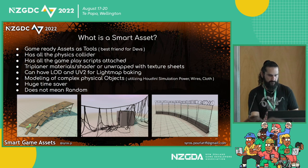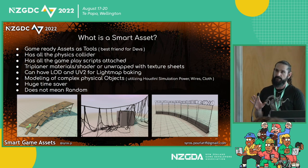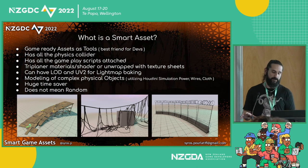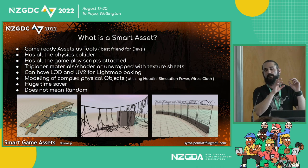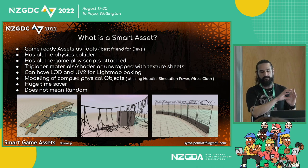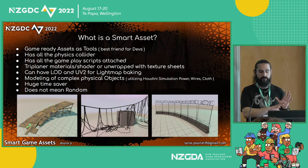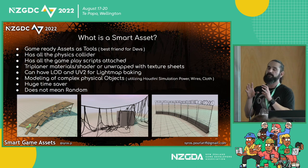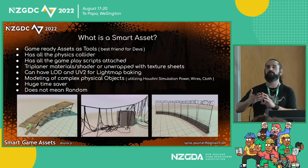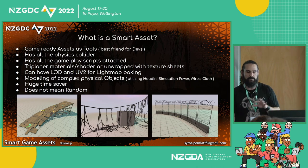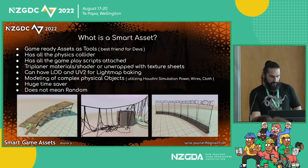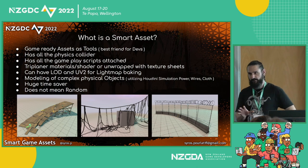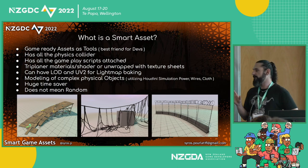These assets will be 90 to 100 percent done art-wise because we can use triplanar materials or unwrap them on the fly in Houdini. Materials are automatically assigned when the model lands inside Unity, so you don't need to search for or set up materials — it's all sorted once and remains consistent throughout the project. Having one tool to create assets ensures consistency of models across the whole game.